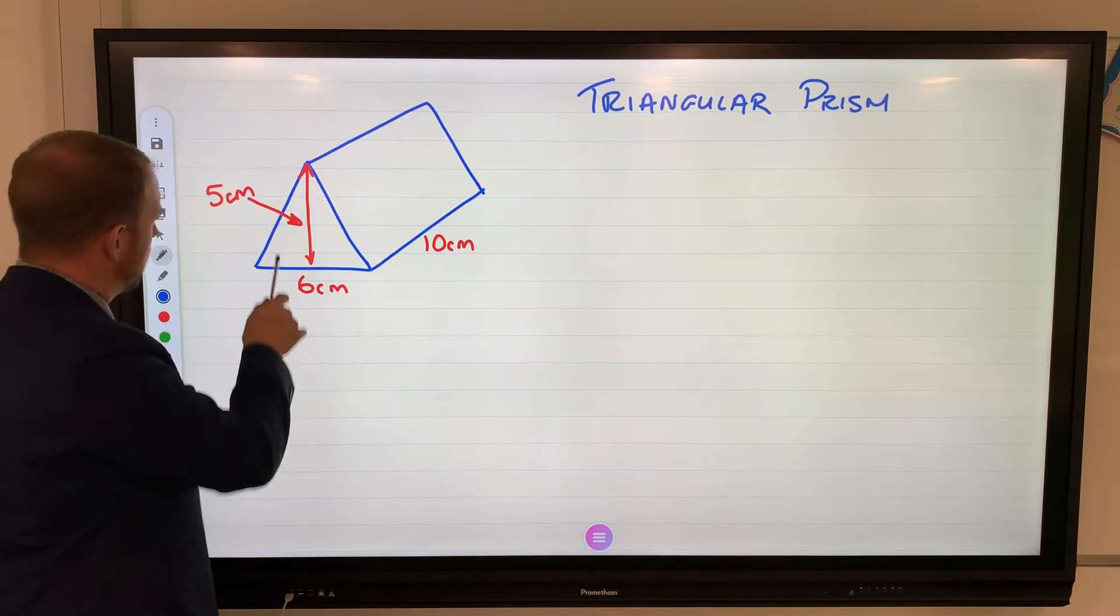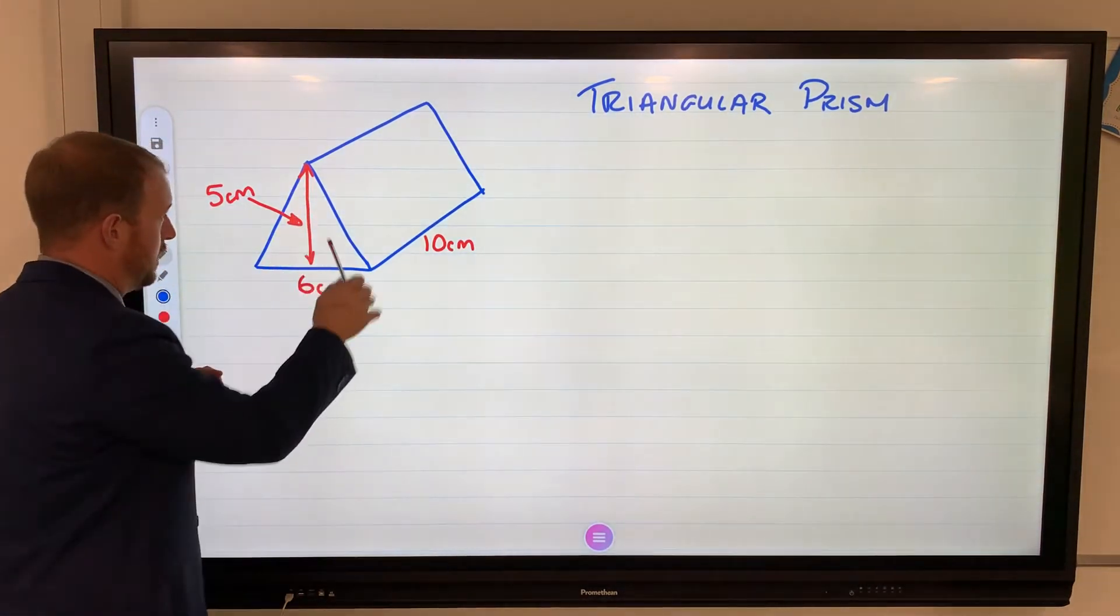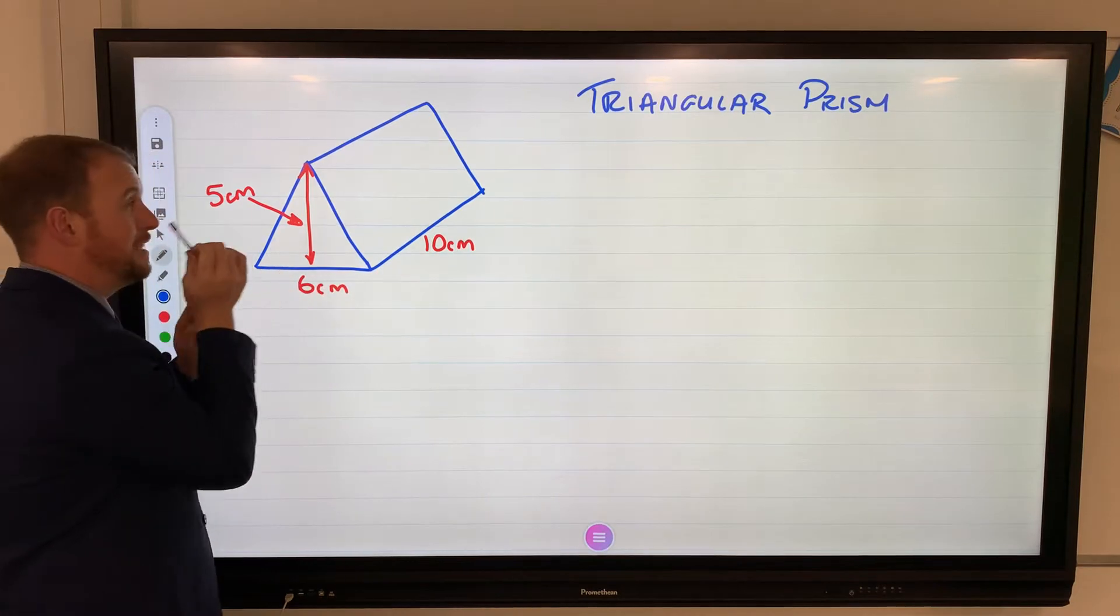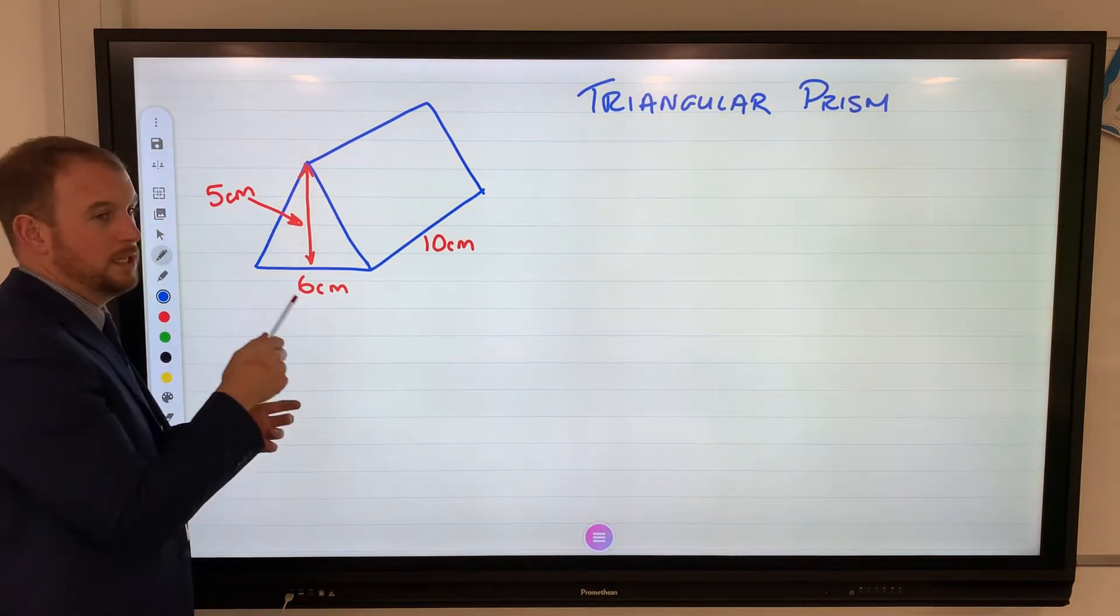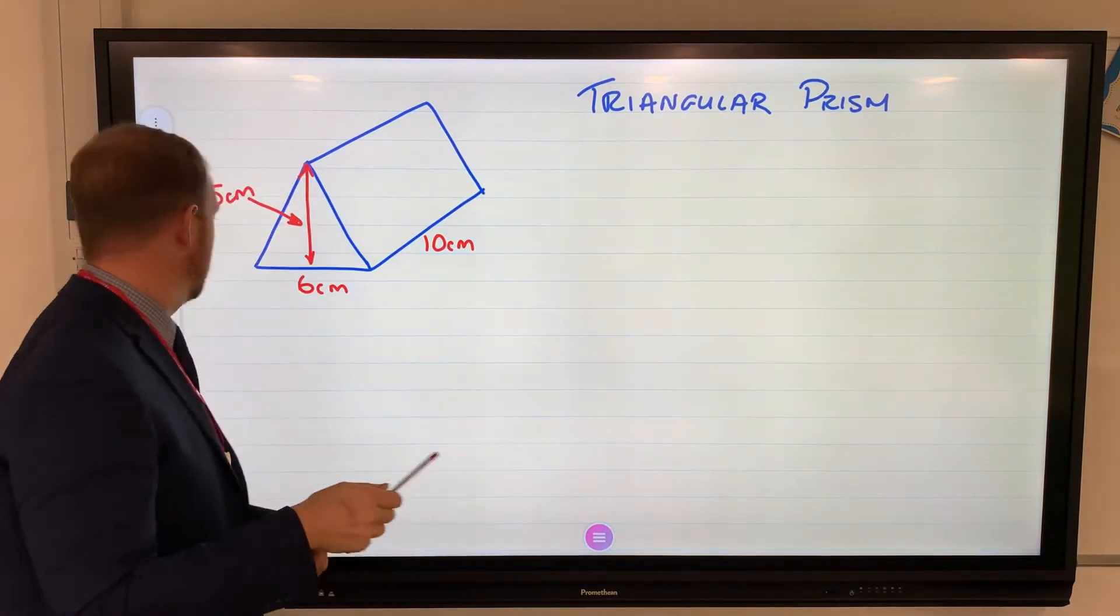Let's look at this shape at the front. This 2D shape on the front, ignore all this - this here is a triangle. We need to be able to calculate the area of a triangle before we can work out the volume.